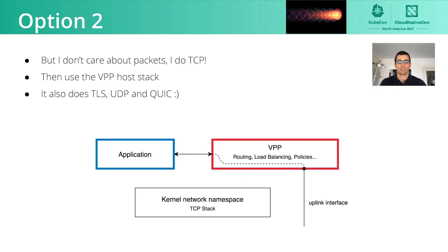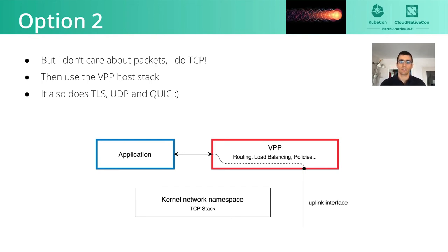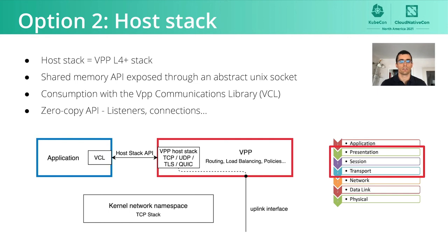If you don't really care about packets and would rather handle connections like a normal application developer, there's the host stack. The host stack is the VPP transport protocol stack. Like the kernel, VPP implements the layer 4 protocols you're familiar with — TCP and UDP — and it also implements higher-level protocols such as TLS, QUIC, and DTLS. The host stack has an API for each of these protocols, based on a shared memory segment just like MEMIF. We can make that API available in the pod. To use it, the application should use the VPP Communications Library, or VCL — a C library that provides a relatively high-level API for the host stack, pretty close to the traditional BSD socket API, making it quite easy to use.